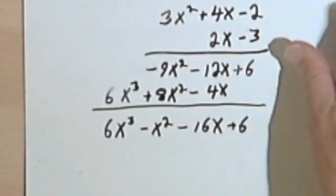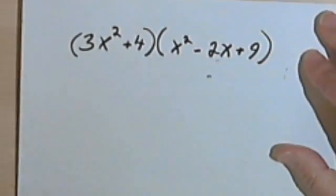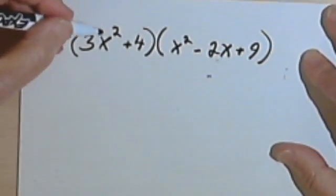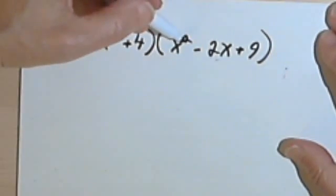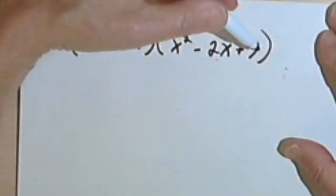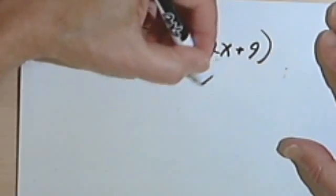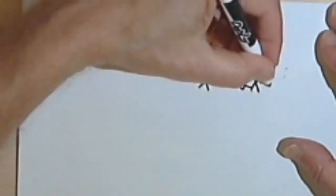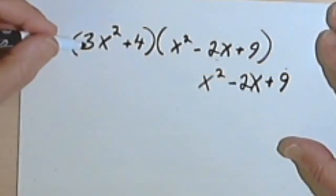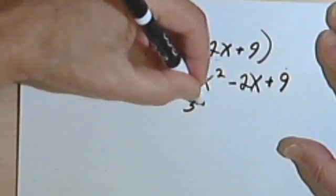So here I have 3x squared plus 4 and x squared minus 2x plus 9.